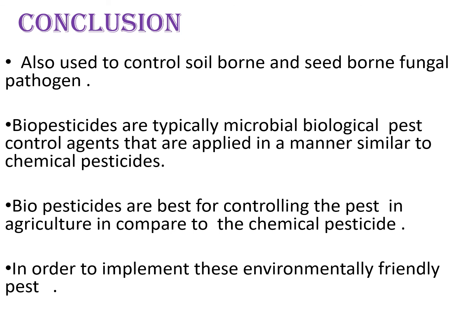Conclusion: we conclude that biopesticides are typically microbial biological pest control agents that are applied in a manner similar to chemical pesticides and are best for controlling pests in agriculture compared to chemical pesticides, in order to implement these environmentally friendly pest control methods. Biopesticides are eco-friendly compared to chemical pesticides, so we should use biopesticides more in the agricultural field.